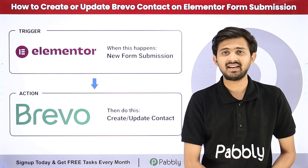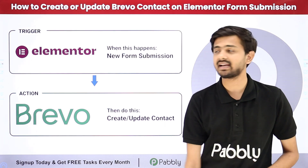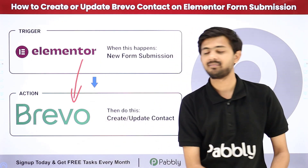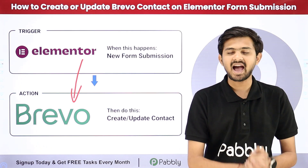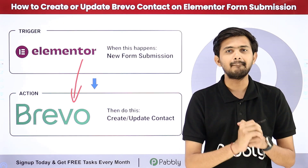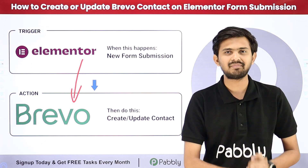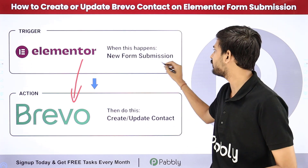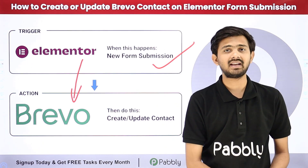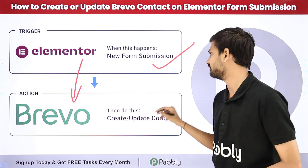I want to do this automatically, and for that I want to build a connection between Elementor and Brevo. For building this connection I'm going to use Pably Connect. Pably Connect is an amazing software for automation and integration. With Pably Connect, whenever I receive a new form submission through Elementor form, I will either create or update an existing contact in my Brevo account.